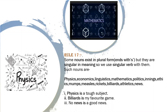Rule number 17: There are some nouns that exist in plural form but their meaning is singular. So you have to see the word's meaning — if singular, use singular verb; if the form is plural, you still use the singular verb. For example, physics, economics, mathematics, politics — although they have plural form, we use a singular verb with them.